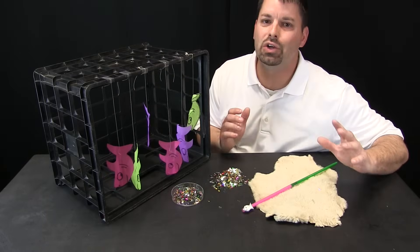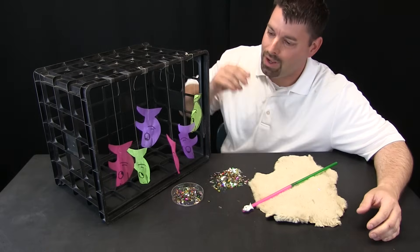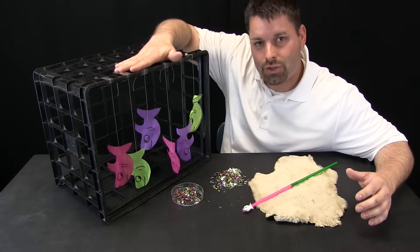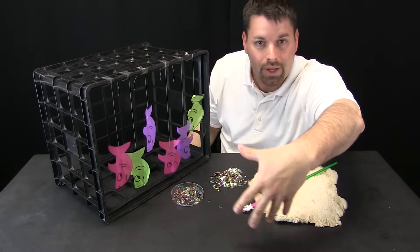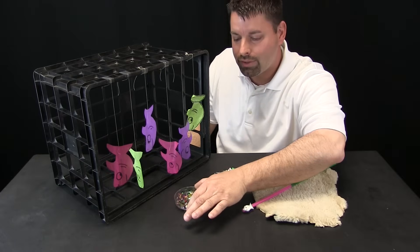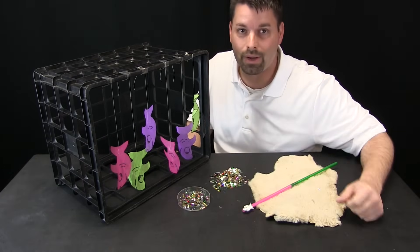So finally, take a look at this game that we made up using static electricity. We call it sharks and minnows. I have some sharks made of tissue paper hanging from this crate. You could hang them from your desk and let them drape down toward the floor. And then I have a little dish of what I call fish food. It is just the confetti we used in the other demonstration.